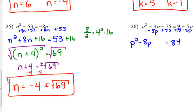Well, we have the same linear coefficient as we did in the previous problem, except this time it's negative. So, we're still going to add 16 to both sides. Negative 8 divided by 2 is negative 4. Square it. You get 16. Add it to both sides.